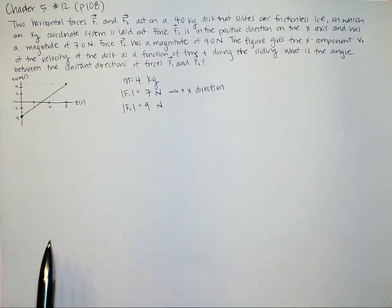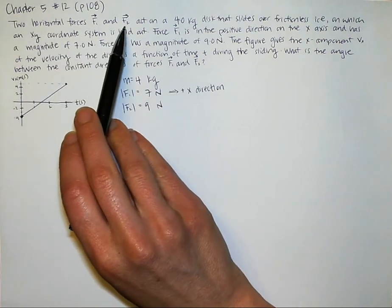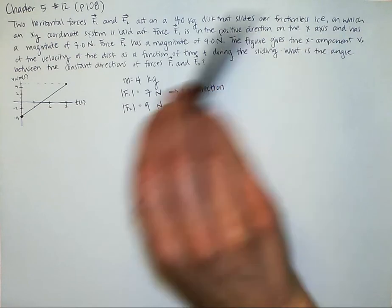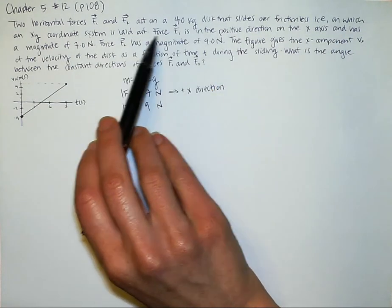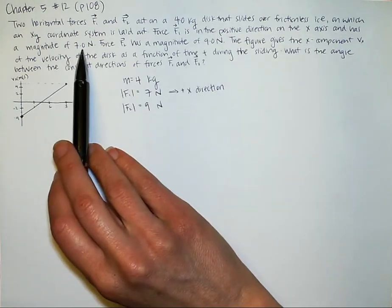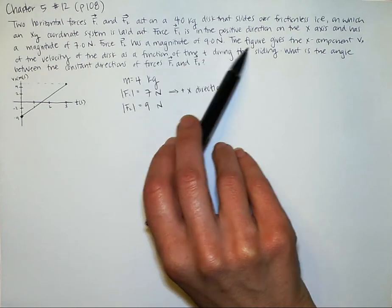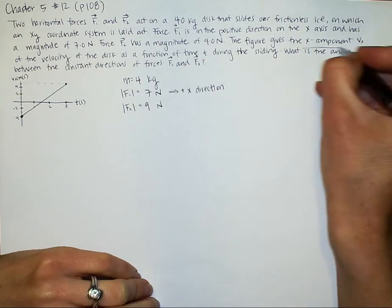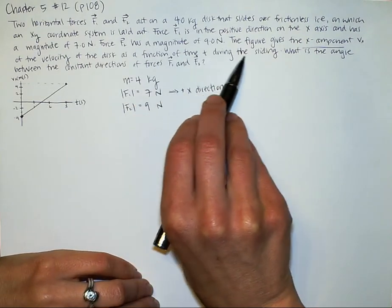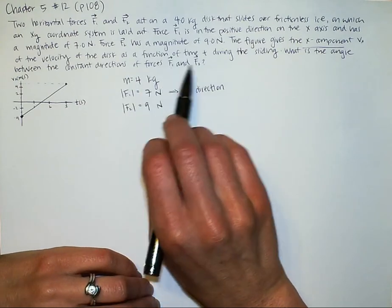This is problem number 12 from chapter 5, talking about forces. We have two horizontal forces, F1 and F2, acting on a 4kg disc that slides over frictionless ice on which an xy coordinate system is laid out. Force F1 is in the positive direction on the x-axis and has a magnitude of 7 newtons. Force F2 has a magnitude of 9 newtons. The figure gives the x component vx of the velocity of the disc as a function of time t during the sliding. What is the angle between the constant directions of forces F1 and F2?